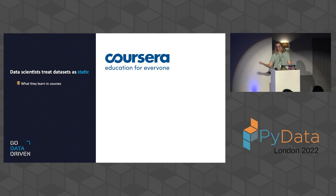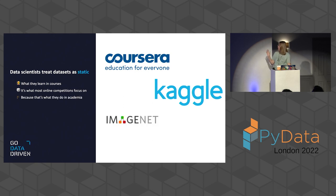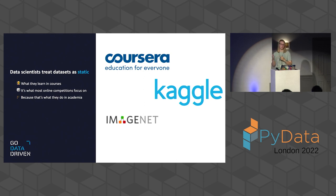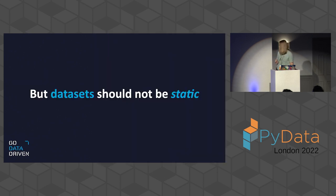Why is there such little focus on the practicalities of dealing with data? Data scientists, because of the way they were taught, often treat their datasets as static — because that's what they were taught in courses. That's what most online competitions focus on, and it's also what most of academia focuses on, squeezing the last bit of performance on static benchmark datasets. And it's what most tools are built for. However, I want to argue that datasets should not be static.